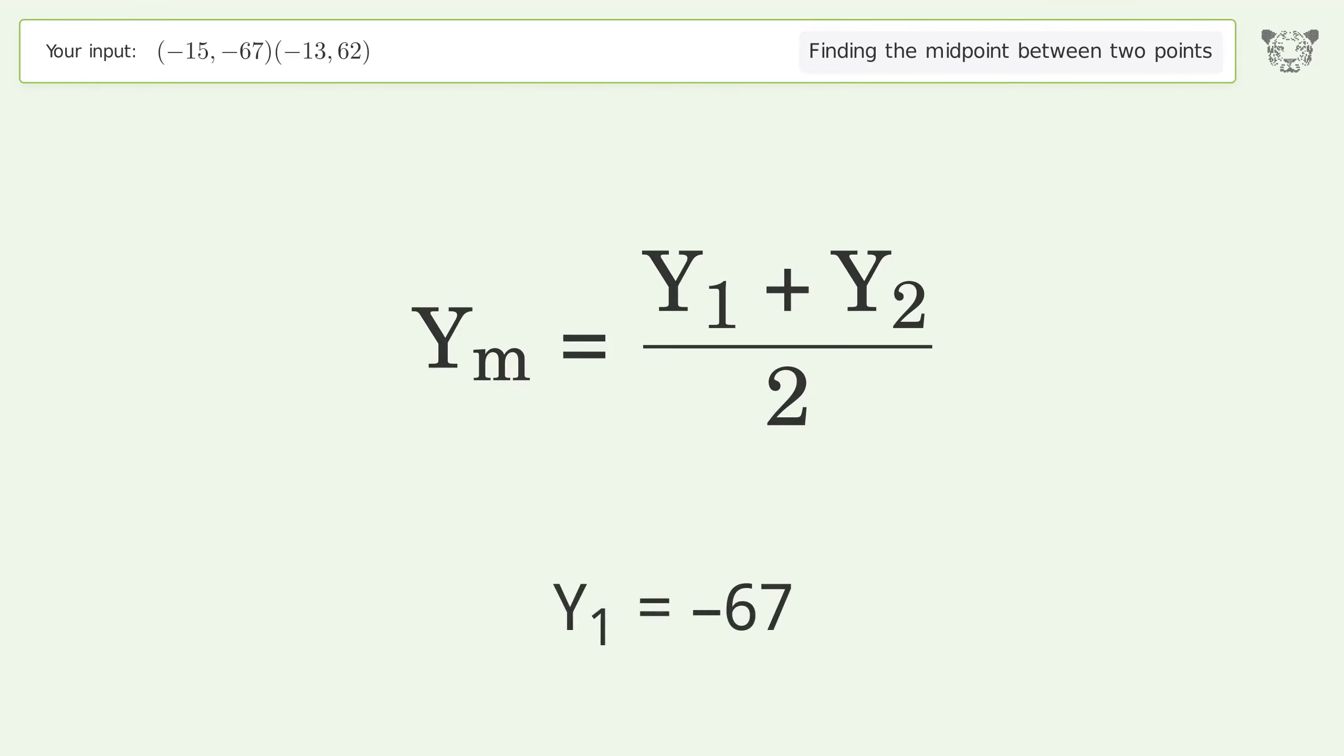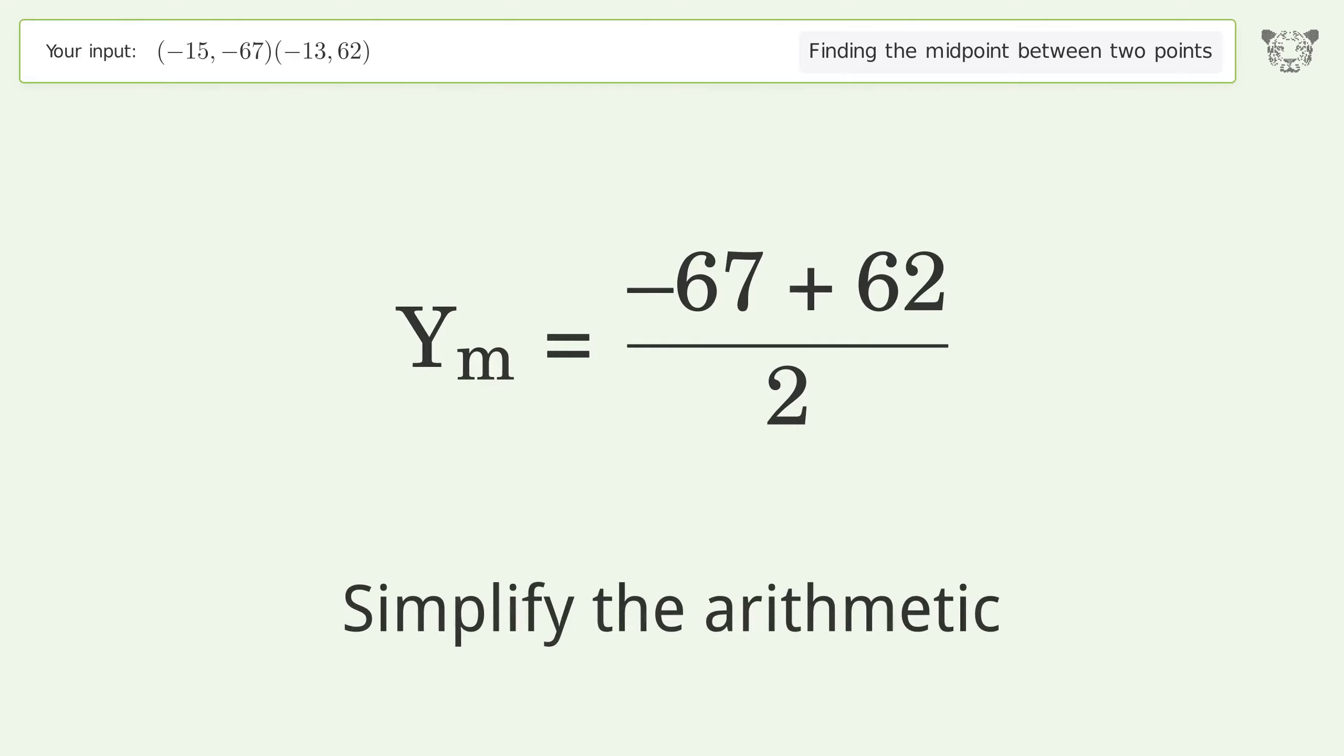Use the y values in the midpoint formula to find the midpoint's y-coordinate. y1 = -67, y2 = 62.